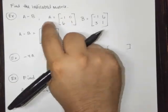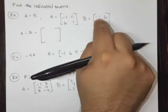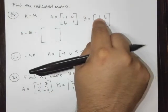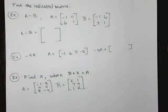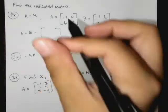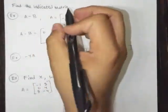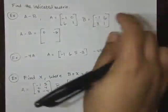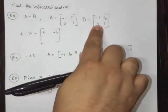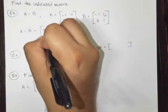So here, A minus B. So negative one minus negative one. There is zero. And then you have zero minus six. So that's negative six. Then you have six minus three. And that's three.